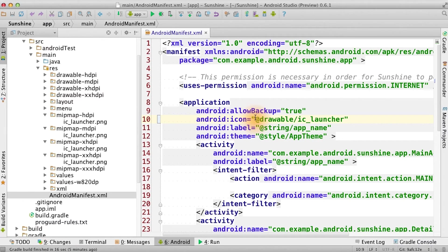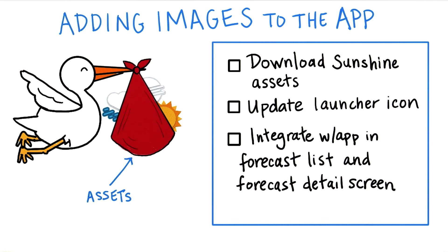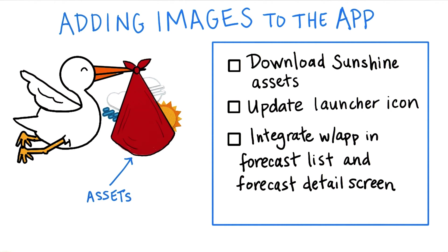In the code, replace @drawable/ic_launcher with @mipmap/ic_launcher, because of the new location of the icons. For the rest of the icons, modify the forecast list and the details screen to display the right weather icon instead of the placeholder one.